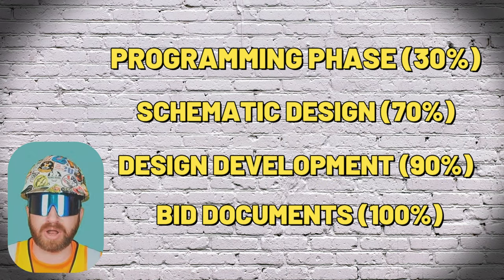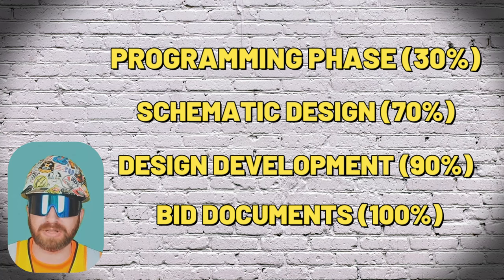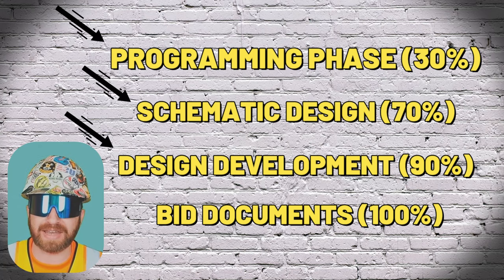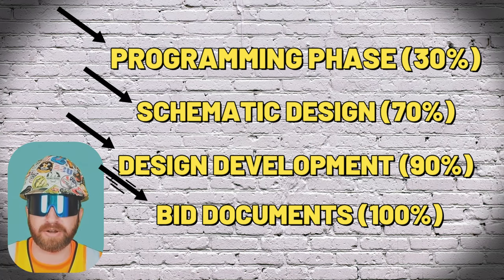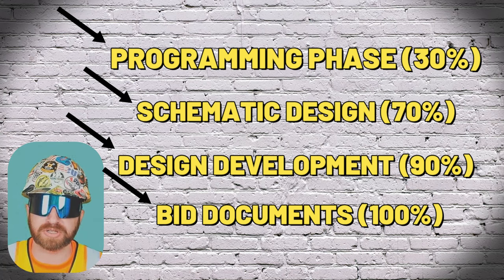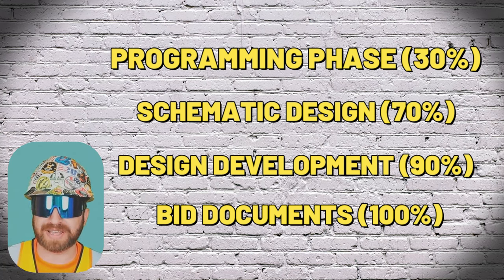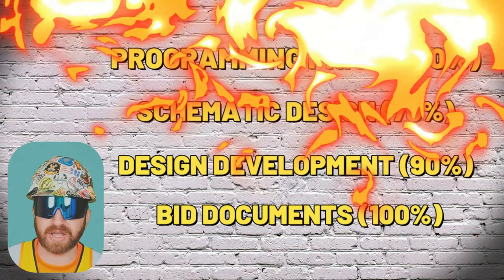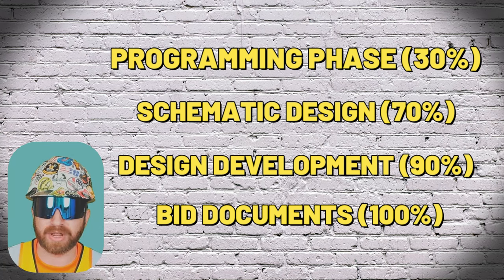Depending on the contract and project delivery method, the owner and design team might need to lean on a general contractor, construction manager, or owner's rep to provide budgets at each of these phases to ensure the final bid documents remain within the owner's overall budget expectations. Without these back checks throughout the design phases, the final project estimate could be blown way beyond the initial budget, leading to redesign and potentially more wasted time and money.